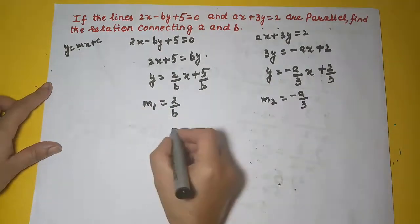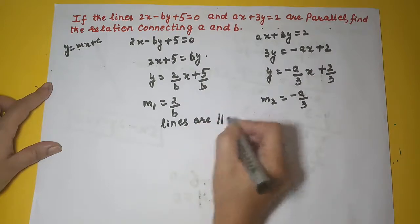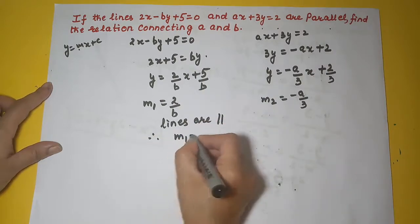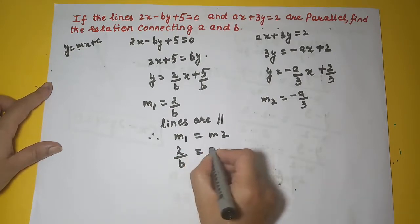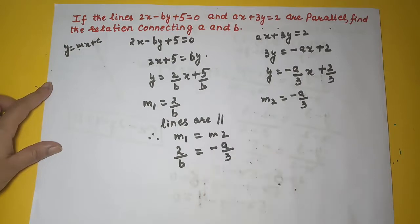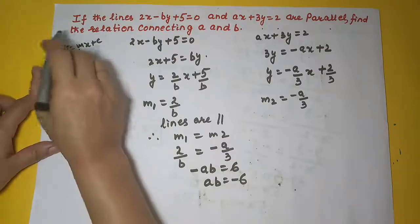Now he is saying that lines are parallel. Therefore, you can say that m1 is equal to m2. Then slopes are equal. So does that mean 2 by b is equal to minus a upon 3? So if you cross multiply, you will get minus ab equal to 6 or your ab is equal to minus 6.